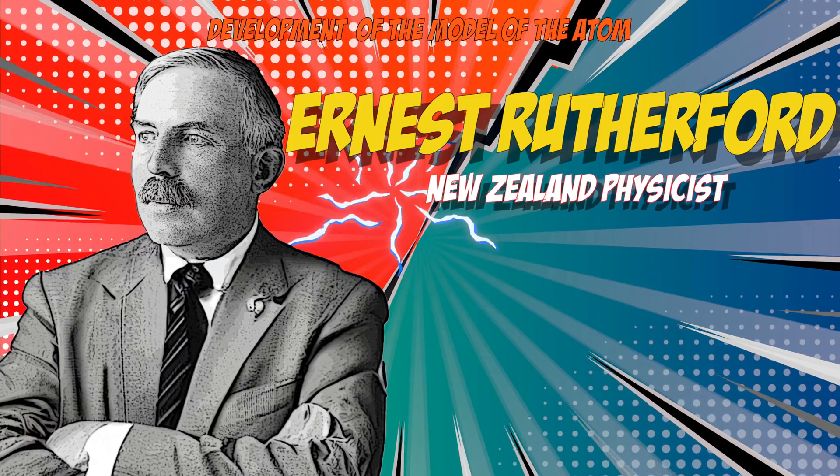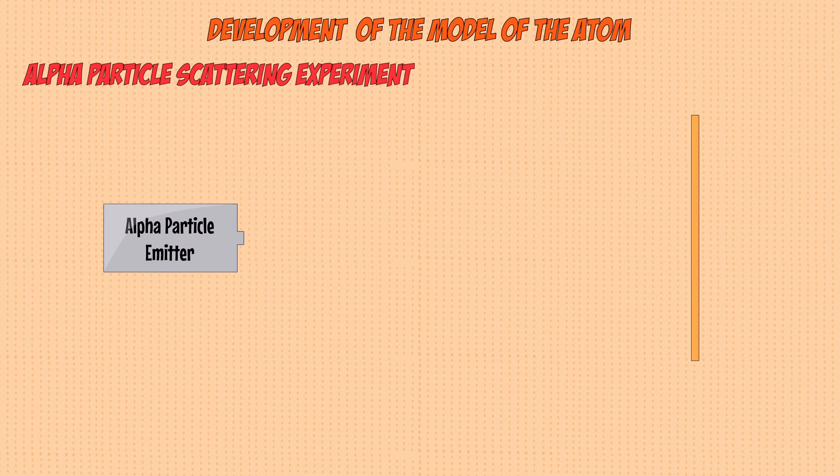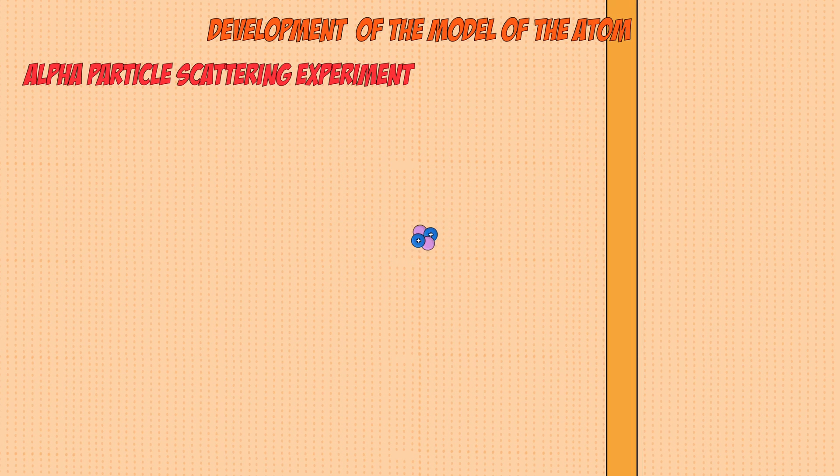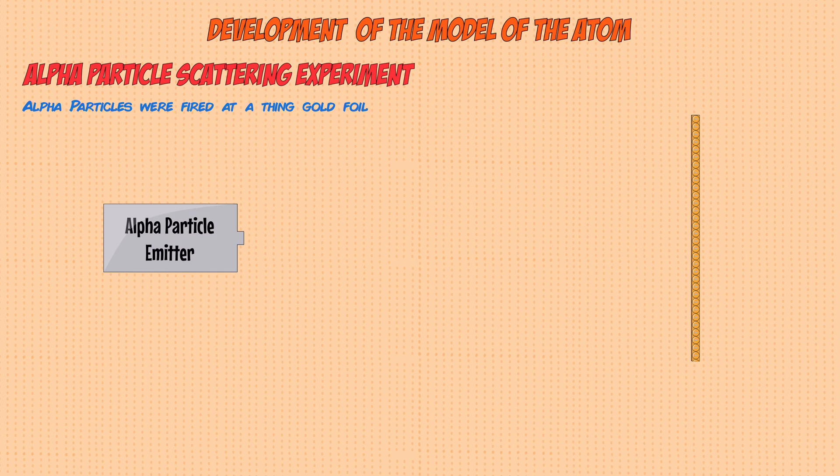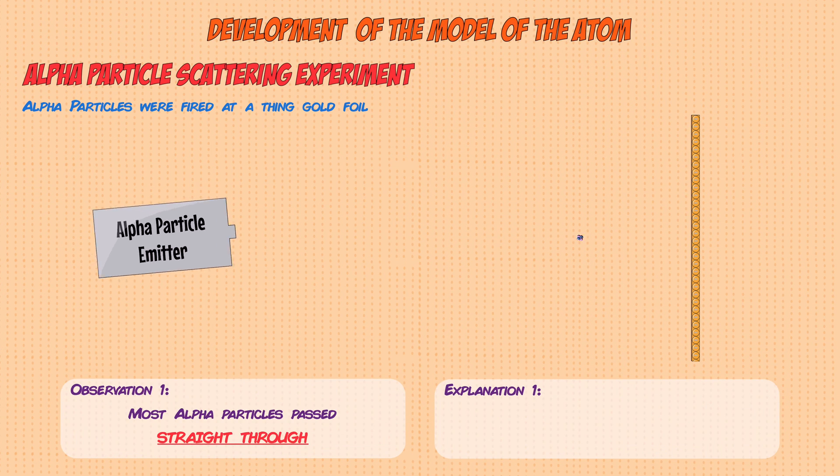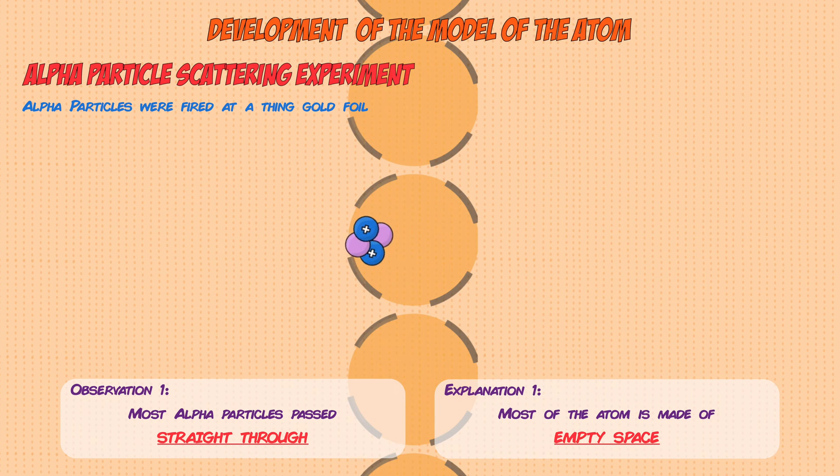In 1909, Ernst Rutherford carried out the alpha particle scattering experiment. In this experiment, he fired positively charged alpha particles at a piece of thin gold foil. The gold foil was so thin that you could assume it to be one atom thick. During the experiment, he observed that most of the alpha particles passed straight through the gold foil, which told him that most of the atom must be made up of empty space.